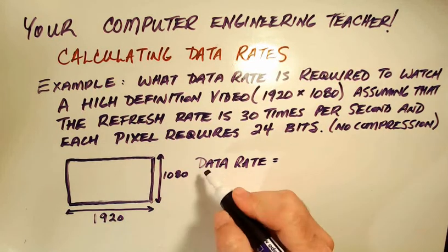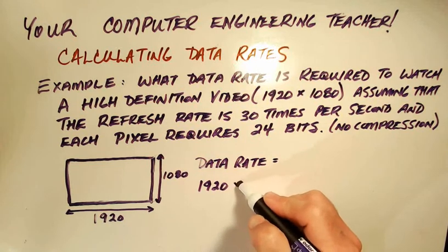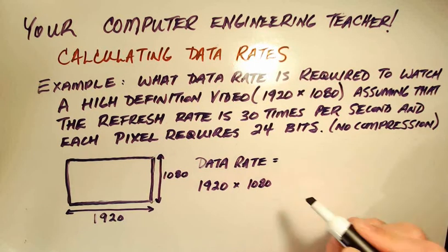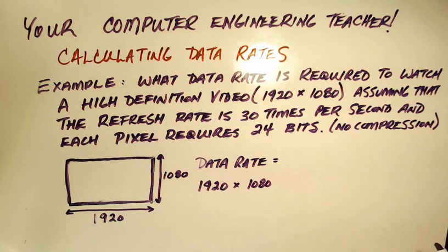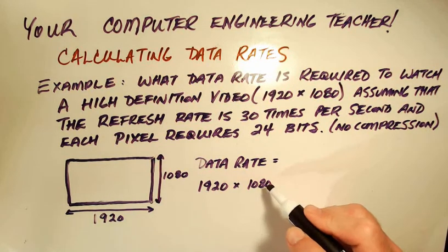We are going to have this many pixels for one screen. And remember that for proper video we're going to have a refresh rate of 30 times per second. So this is what it is for one screen, but we're going to do this 30 times per second.